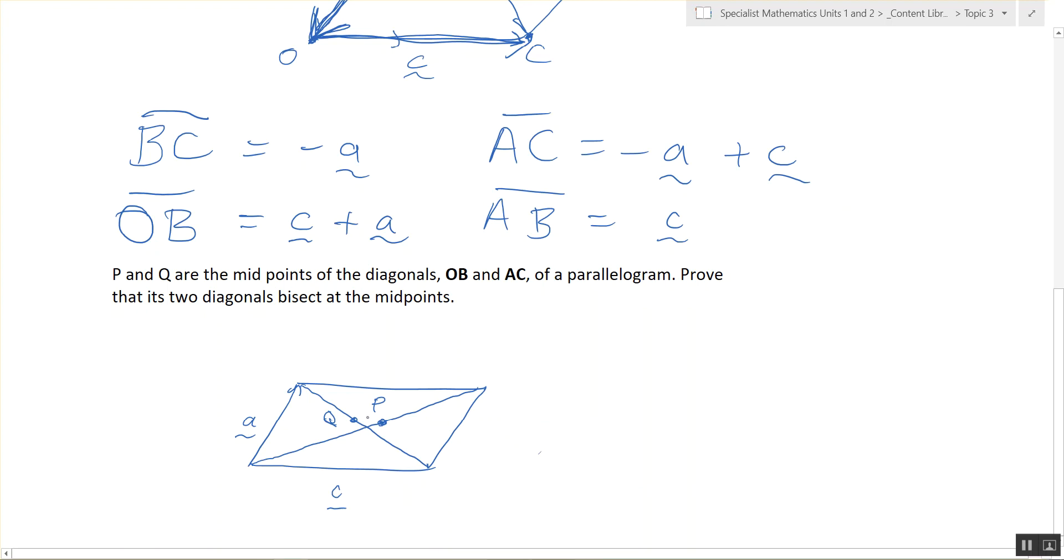So we're proving that they are exactly in the center, so they bisect in the middle. So they're the same point? Yep. Okay, so we start by drawing them not as the same point, because we haven't proved that they are the same point yet. That's right.